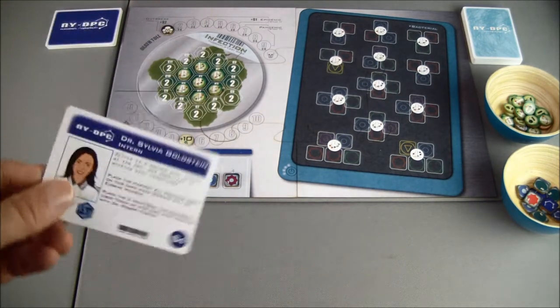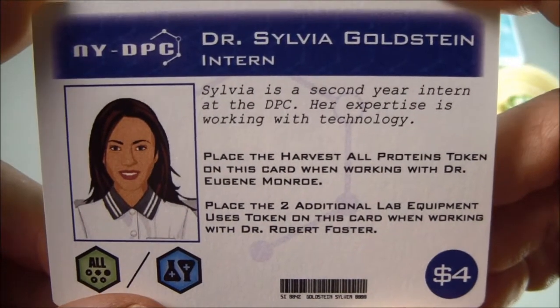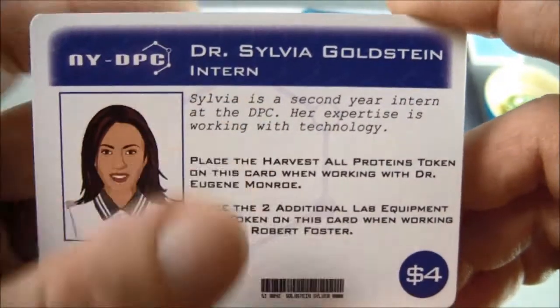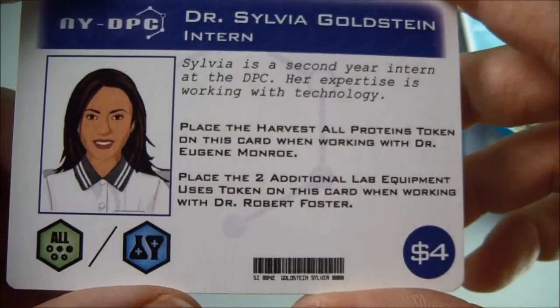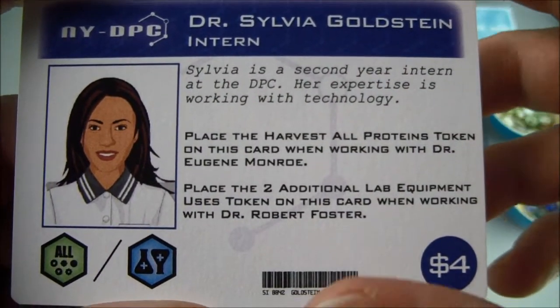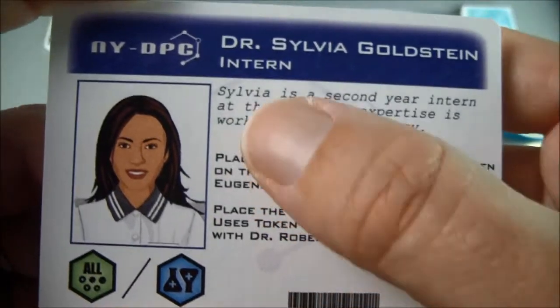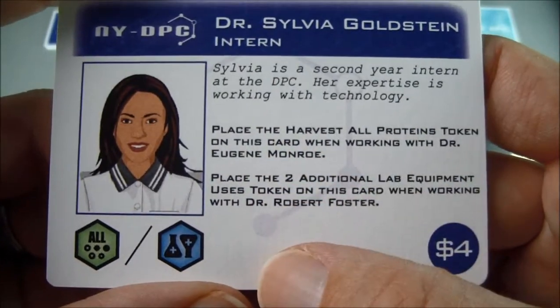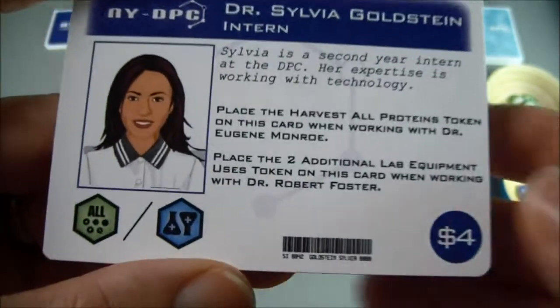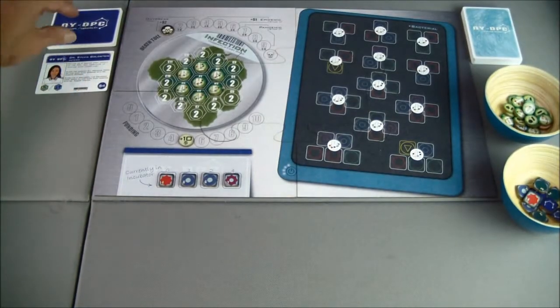First up we have Dr. Sylvia Goldstein. She's an intern, so we only get these bonuses down here and I'll explain what these are when they become available, if she's working with one of the other doctors since she's an intern. So she has to be working with either Dr. Eugene Monroe or Dr. Robert Forrester, and it costs four to purchase the intern.